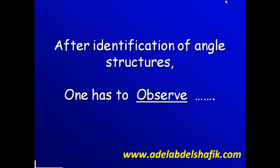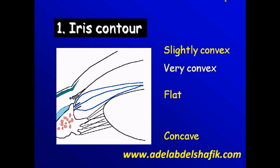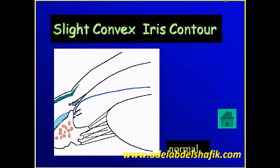After we identify where the angle is, we need to look at certain points. First, we need to have an idea about the iris contour. The most preferable part of the iris — it can be slightly convex, very convex, flat, or concave. Slightly convex iris is the normal, the most preferable contour.